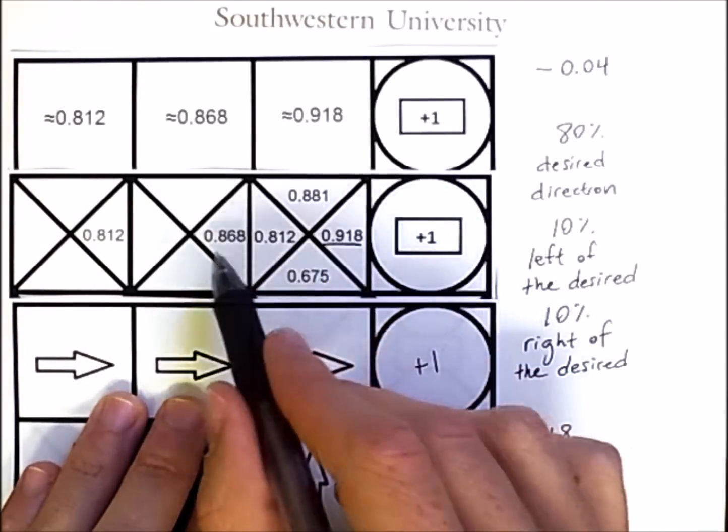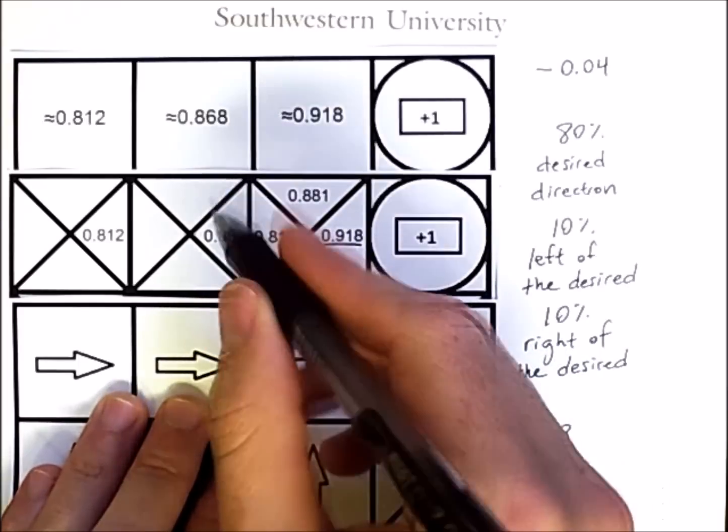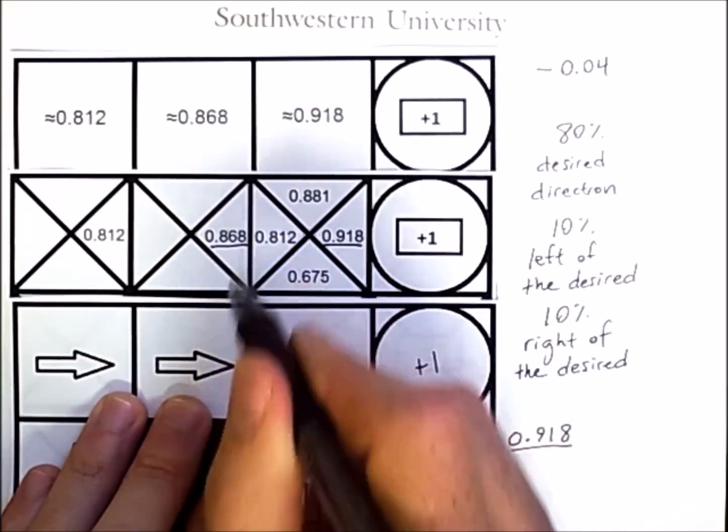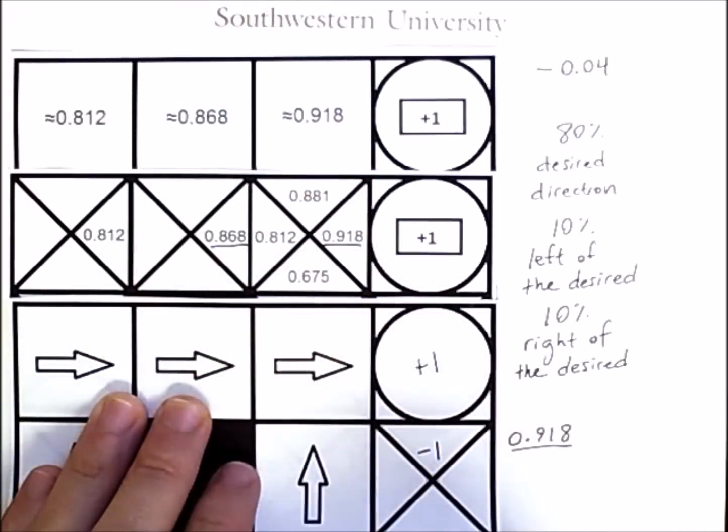Similarly, in this square, moving to the right, which is the action here, has this value.